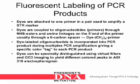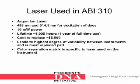Dyes can be spectrally distinguished using virtual filters and CCD imaging to produce different colored peaks in the ABI 310 electropherogram. The laser used in the ABI 310 is an argon-ion laser with wavelengths between 488 nanometers and 514.5 nanometers for excitation of dyes. It has 10 milliwatt power and a lifetime of approximately 5,000 hours, which is one year of full-time use, with a replacement cost of about $5,500. It leads to the highest degree of variability between instruments and is the most replaced part. Color separation matrix is specific to the laser used on the instrument.